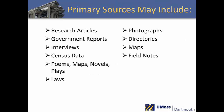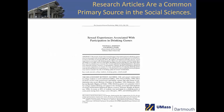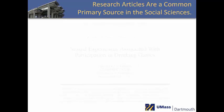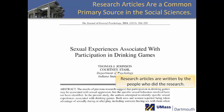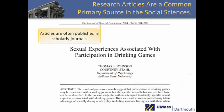Here are a few examples of types of materials that can be used as primary sources. Research articles are a common primary source in the social sciences. These articles are written by the people who conducted the research and are often published in peer-reviewed journals.